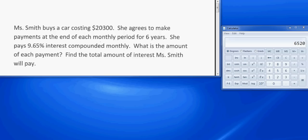Ms. Smith buys a car costing $20,300. She agrees to make payments at the end of each monthly period for 6 years. She pays 9.65% interest compounded monthly, and we want to know the amount of each payment. There's a second question, but we'll look at that later.